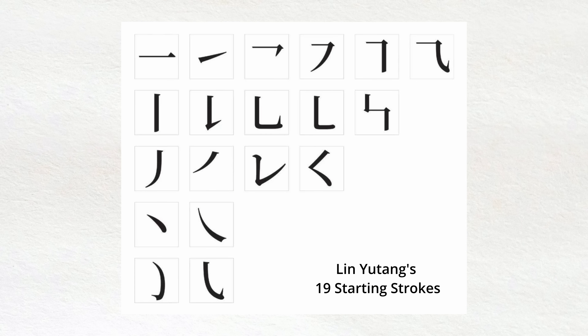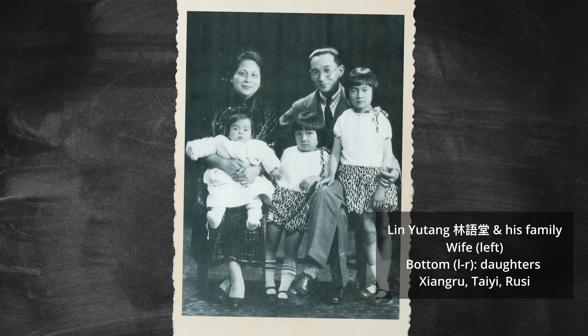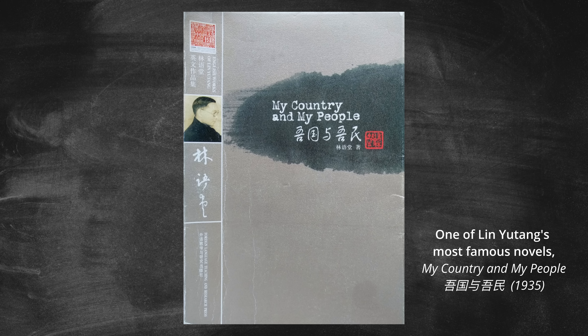Lin Yutang published this system for managing and retrieving Chinese characters in 1917, right around the time the Shu Jindong typewriter took off. Given the success of the Shu-style typewriter, Lin Yutang knew he had to perfect his own typewriter, and it took him almost 30 years to accomplish this feat. Amidst instability in China, Lin Yutang traveled around the world, writing and translating novels and articles in both Chinese and English — and he used the sales of these books to fund his passion project: his Chinese typewriter.